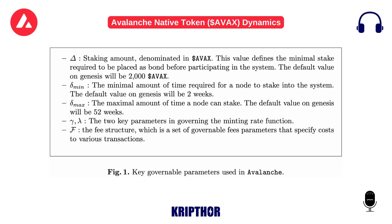Figure 1 — Key governable parameters used in Avalanche. Triangle (staking amount, denominated in AVAX): defines the minimal stake required to be placed as bond before participating in the system; default value at Genesis will be 2,000 AVAX. S-min: the minimal amount of time required for a node to stake; default at Genesis will be 2 weeks. S-max: the maximal amount of time a node can stake; default at Genesis will be 52 weeks. V and H: the two key parameters governing the minting rate function. F: the fee structure, a set of governable fee parameters specifying costs to various transactions.